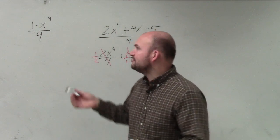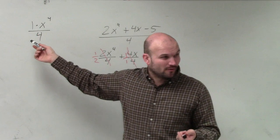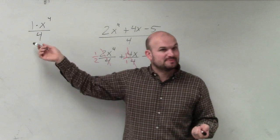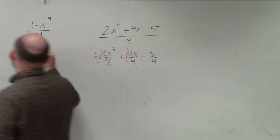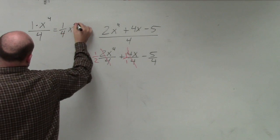However, the coefficient of x is not 1, because that 1 is being divided by the 4. Does everybody see that? That 1 is being divided by the 4. So in reality, this is the same thing as 1 fourth x to the 4th.